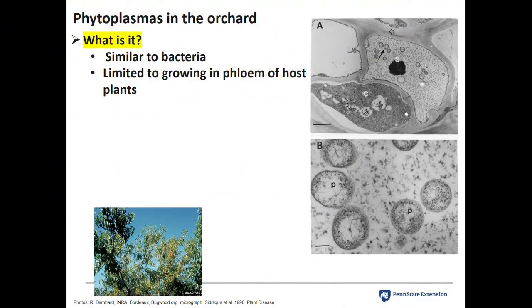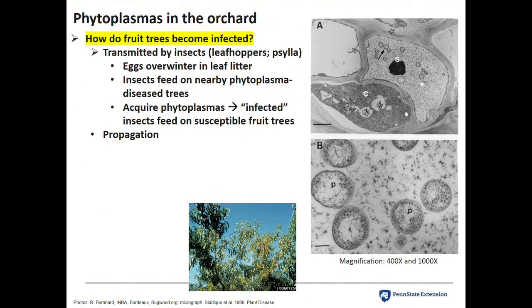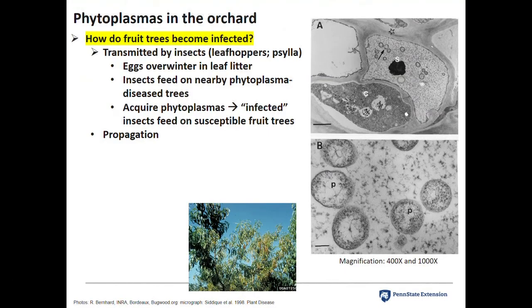Phytoplasmas are bacteria-like organisms that live in the phloem cells, much bigger than viruses — you can actually see them with a compound microscope. Why we care: they're very economically important, reducing productivity anywhere from 10 to 80 percent, reducing fruit size, and some are quarantine pathogens. Trees become infected through insects — specifically leafhoppers and psyllids — which overwinter as eggs, hatch, feed on infected source trees, then move to clean trees and infect them. Infection can also occur through propagation.